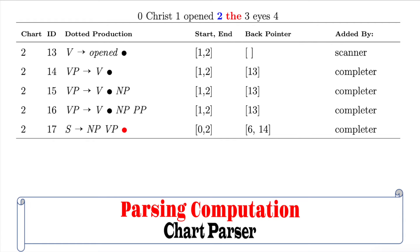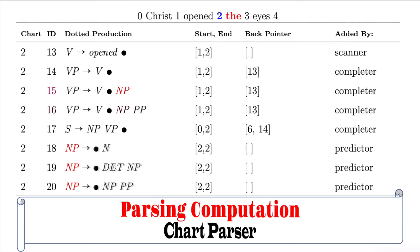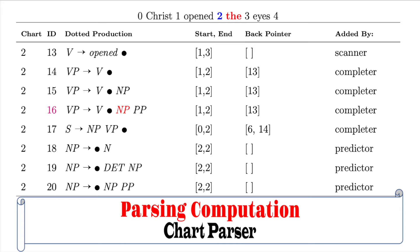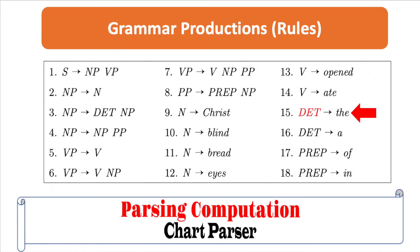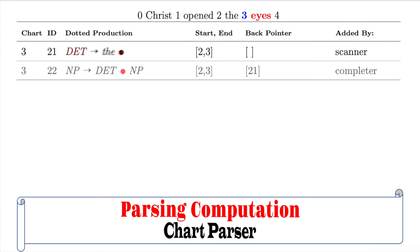Let's process ID number 15. Since the dot is to the left of NP, we need to add all NP productions to chart 2. The next to be processed is ID number 16. Since the dot is to the left of NP, we need to add all NP productions to chart 2, but all the NP productions that need to be added are already in chart 2, so no NP productions are added. For ID number 18, since the input word is not a noun and our grammar does not have the word 'the' as a noun, there is no match. So ID number 19 will be processed next — DET is a part-of-speech category — and it will scan the grammar to check whether or not the input word 'the' is found.